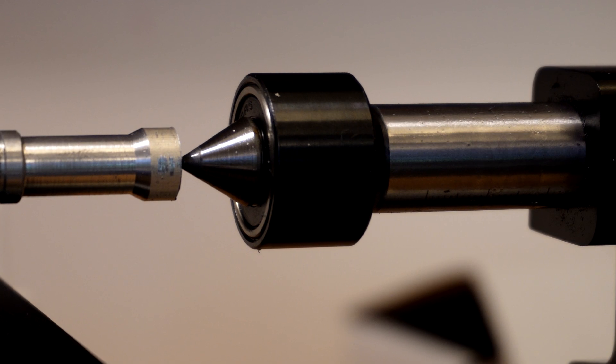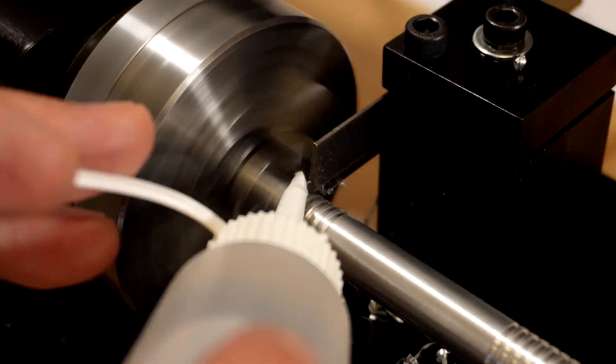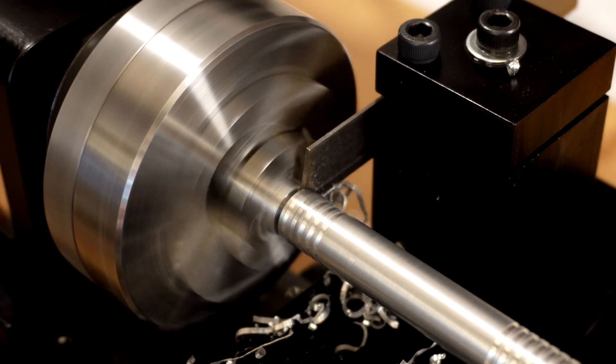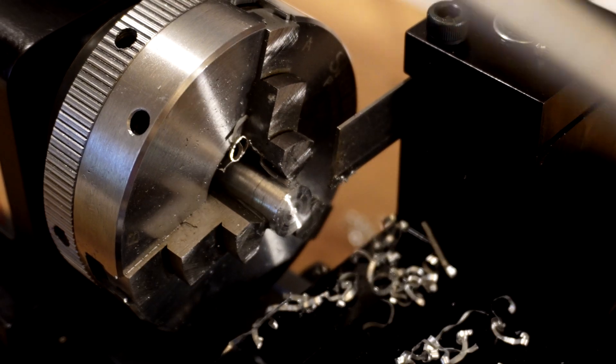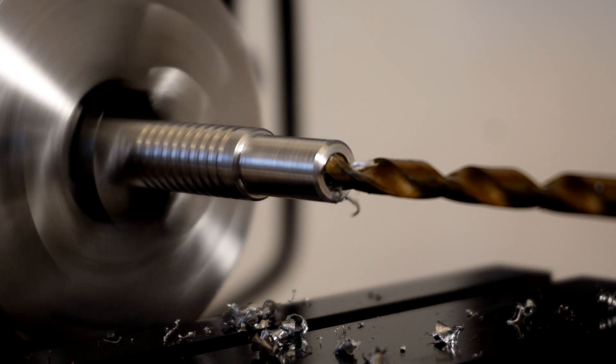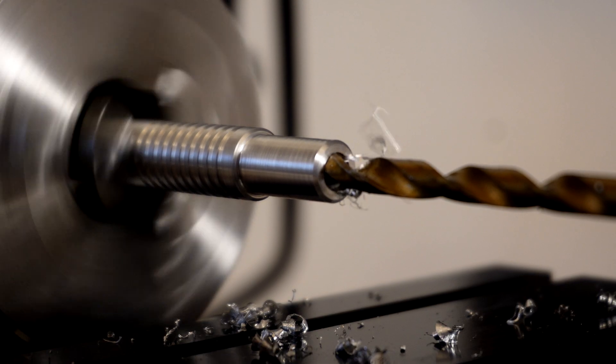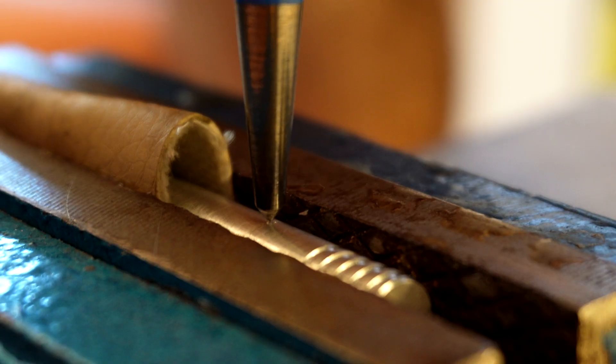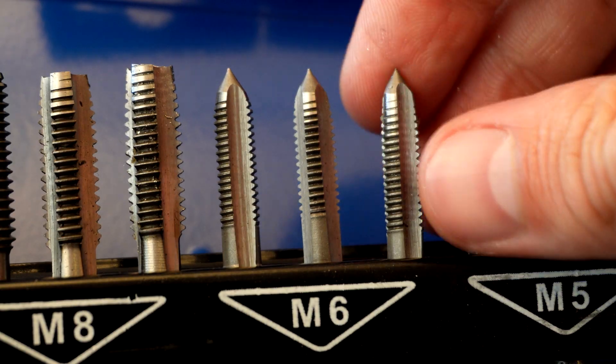On one end we will drill a hole so that later we can insert a collet and a tapping drill. At the other end we will make a threaded hole for a lever which will make tapping micro threads much easier.